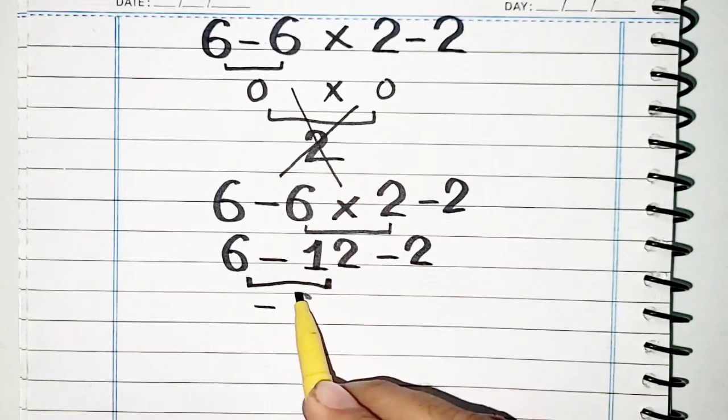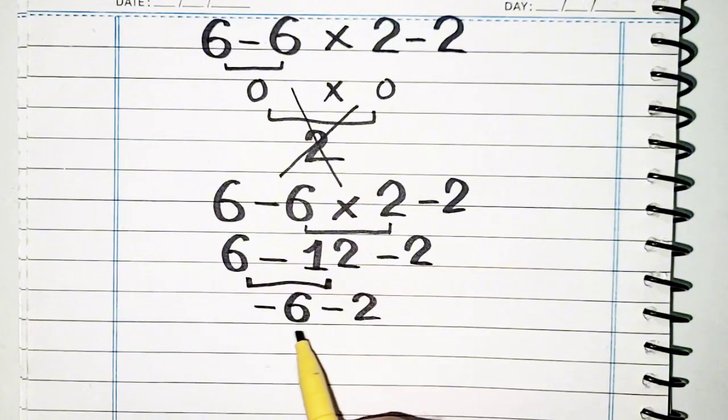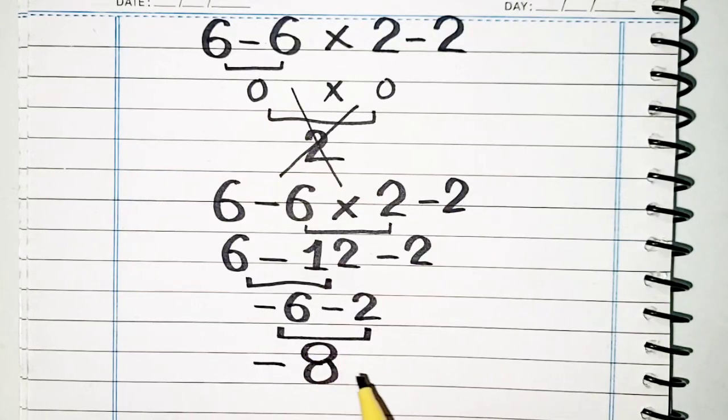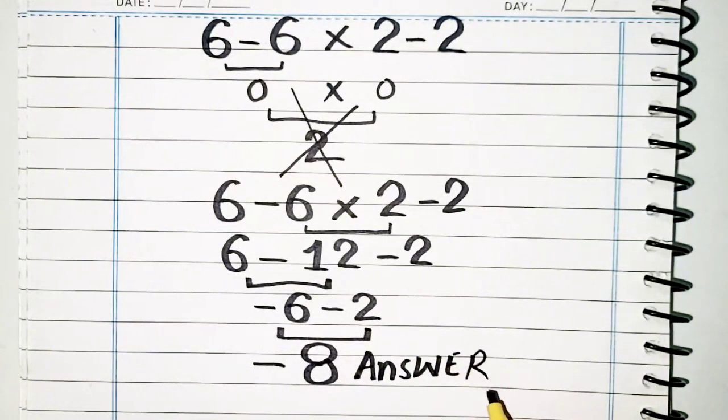Now 6 minus 12 minus 2: negative 6 minus 2, and we will get negative 8, which will be our correct answer. Thank you for your support.